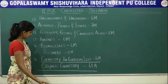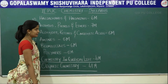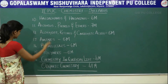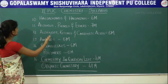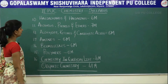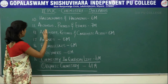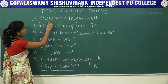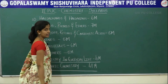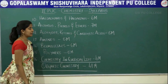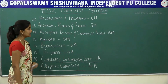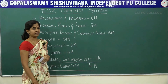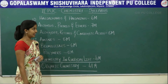The next branch is organic chemistry, which has 6 chapters. The first chapter — the 10th chapter overall — is haloalkanes and haloarenes. Its total weightage is 6 marks, divided into a 1-mark question and a 5-mark question.